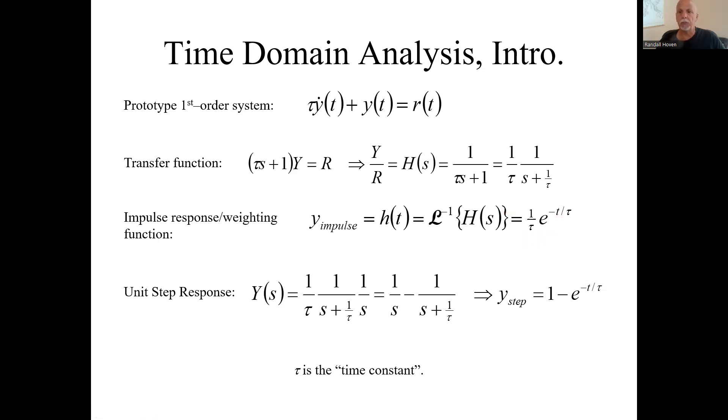At time t equals zero, it'll be one over tau. And then it decays down to zero ultimately as time goes to infinity. And how fast it decays is dictated by this tau. Tau is the time constant.